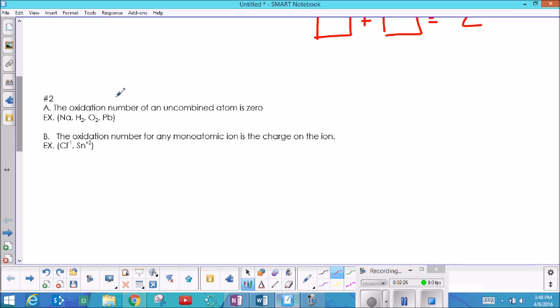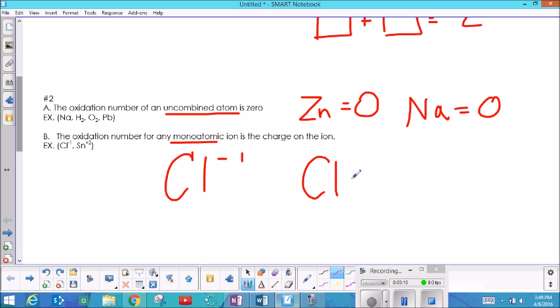Rule number two is about individuals. It says the oxidation number of an uncombined element is zero. So if I just take any old element off the periodic table, like zinc, and I ask you what's the oxidation number of zinc, it's all by itself so the answer to that would be zero. The oxidation number for any monoatomic ion is the charge on the ion. So if they say you have a Cl minus one and then they ask you what's the charge of the Cl, you say minus one.